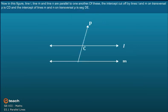Now in this figure, line L, line M, and line N are parallel to one another. Of these, the intercept cut off by lines L and M on transversal P is CD, and the intercept of lines M and N on transversal P is segment DE.